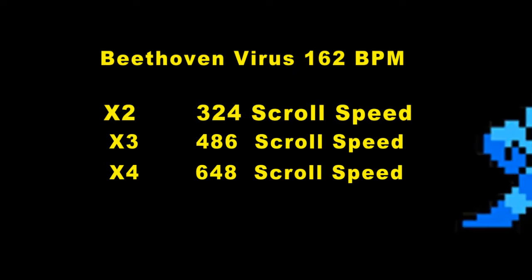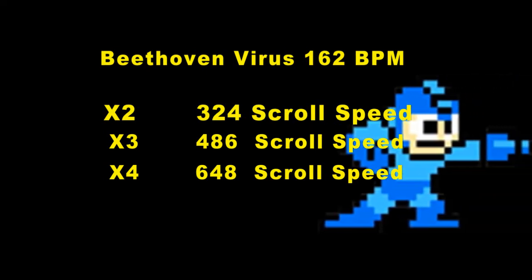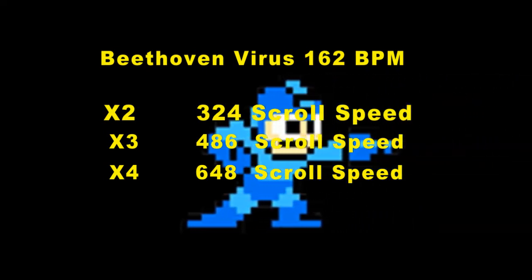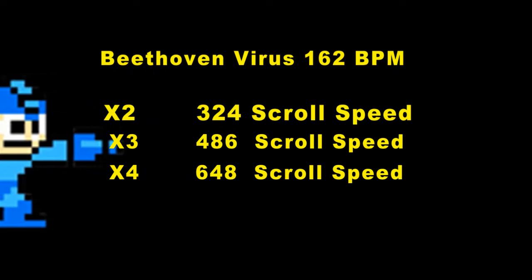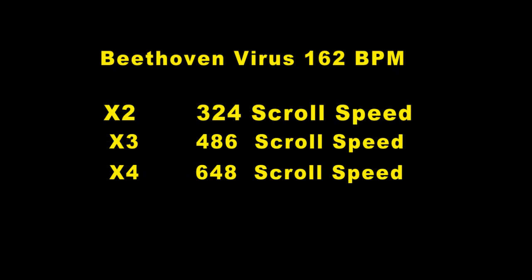So 162 times three — sorry about that interruption. Beethoven Virus is 162 beats per minute. Times three puts it at 486 scroll speed, and times four puts it at 648 scroll speed.